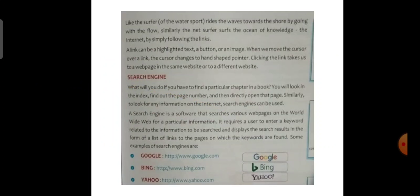Tim Berners-Lee is the founder of the WWW. What will you do if you have to find a particular chapter in a book? You will look in the index, find out the page number, and then directly open that page. Similarly, to look for any information on the internet, search engines can be used. A search engine is software that searches various web pages on the World Wide Web. It requires a user to enter a keyword related to the information to be searched and displays search results as a list of links. Some examples of search engines are Google, Bing and Yahoo.